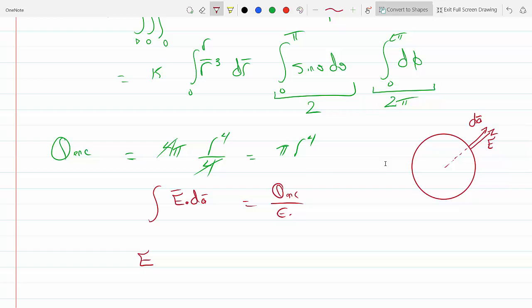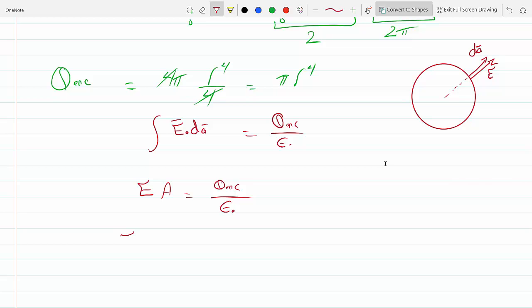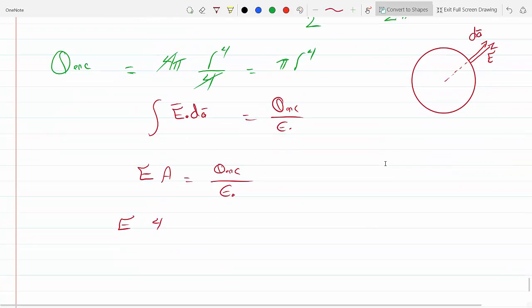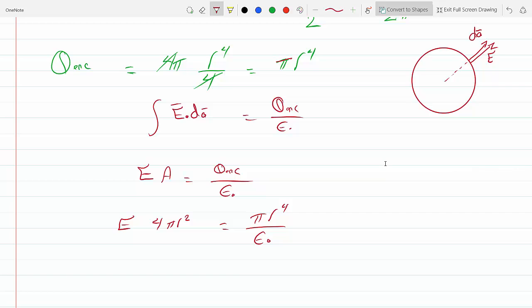So this becomes E·A equals Q enclosed over epsilon. Now the area of the Gaussian surface, the red surface that I drew here, is 4π r², and Q enclosed we found out it was π r⁴ over epsilon.